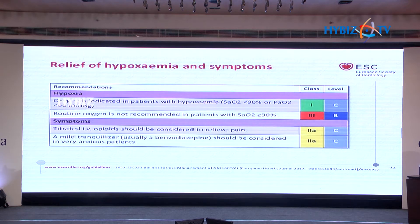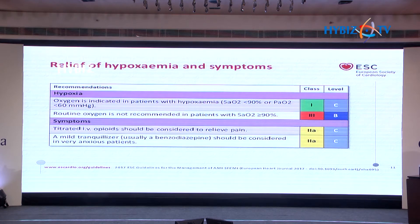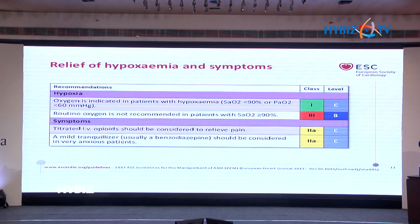Regarding relief of ischemia: oxygen saturation threshold has changed from 95% to 90% — supplemental oxygen should only be given if saturation is below 90% or PaO2 is less than 60 mmHg. Opiates to relieve pain are Class IIA, and mild tranquilizers are also Class IIA, both at Level of Evidence C.